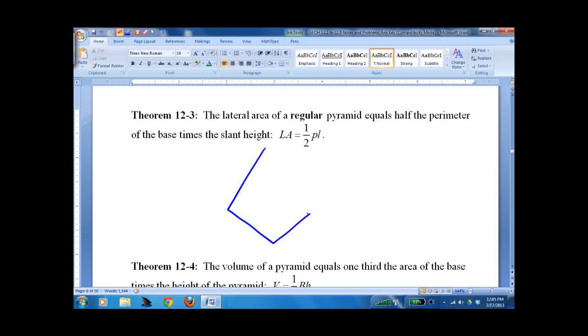Now how do we find the lateral area? Well, if we know the base is a regular polygon, a square in this case, we know the slant height is 12 or something, it doesn't matter. We can just quickly do the lateral area. It's one half the perimeter of the base, which is 8 times 4 (four sides at 8 each) times the slant height of 12. 192 units squared.